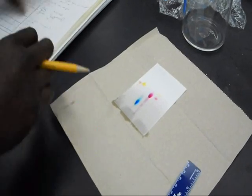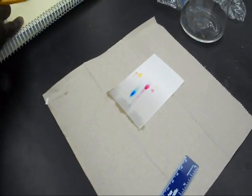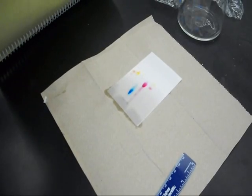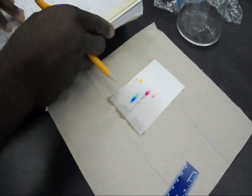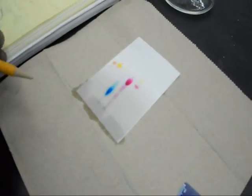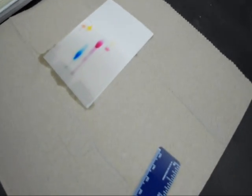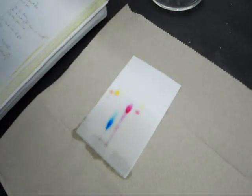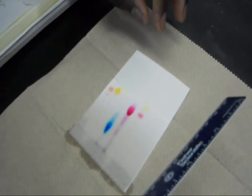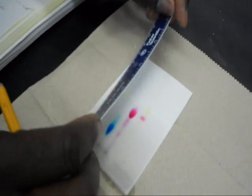Now we're going to take our solvent distance, these dots, our RF values and measure them. So the first one is going to be methyl red.